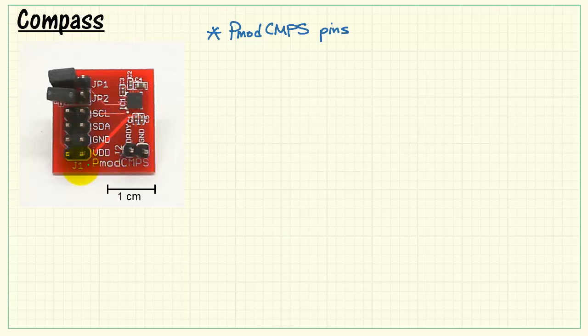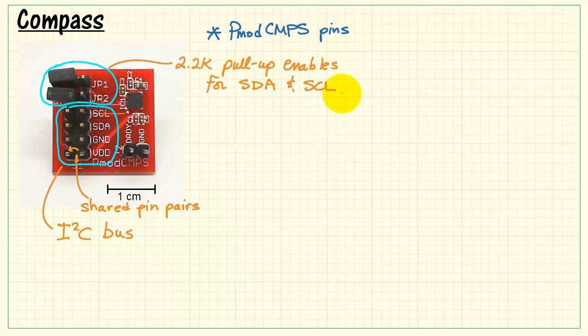Let's take a look at the pins for the PMOD compass board. In this zone we have the power and I2C bus pins. Should note that the pin pairs are actually joined together. Up here we have the pull-up enables for the serial data and serial clock. Leave these disconnected though if you're using MyRio because MyRio already has these pull-ups built in.